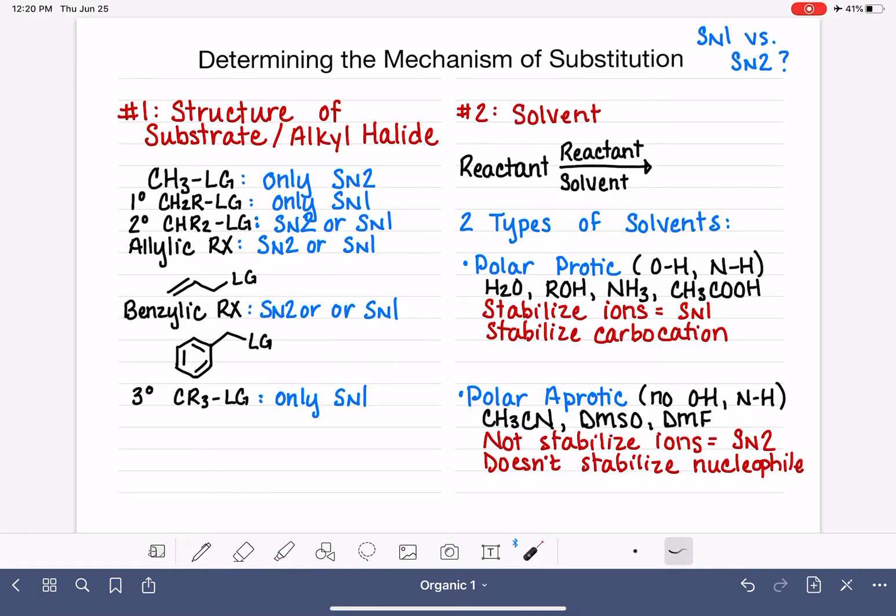Now, you might be saying, wait a minute, because I told you that the solvent was going to be our factor number two and it's a relatively easy way for us to predict if it's SN1 or SN2. And all of this explanation doesn't sound really all that easy. This is pretty tricky stuff.